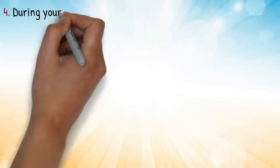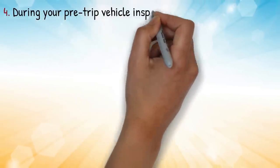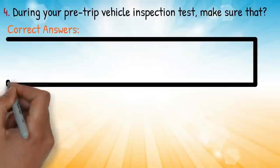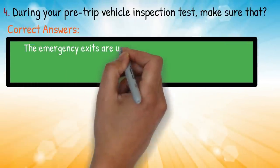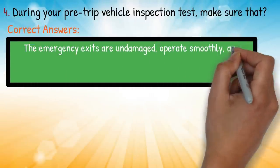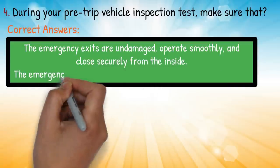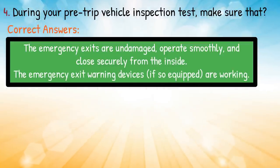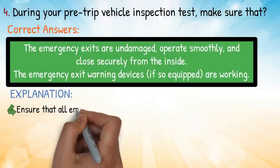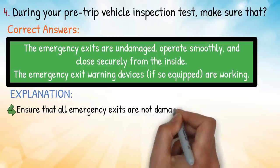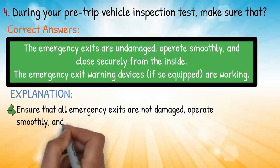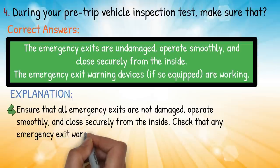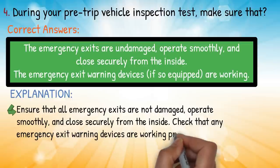Question four: during your pre-trip vehicle inspection, make sure that — the emergency exits are undamaged, operate smoothly, and close securely from the inside; and the emergency exit warning devices, if so equipped, are working. Explanation: ensure that all emergency exits are not damaged, operate smoothly, and close securely from the inside; check that any emergency exit warning devices are working properly.